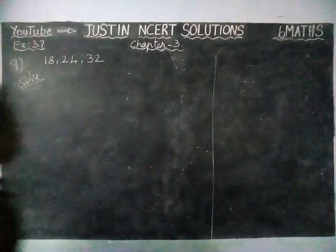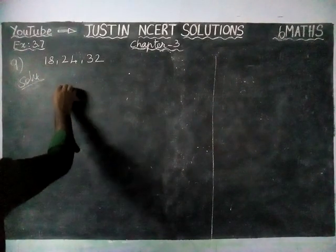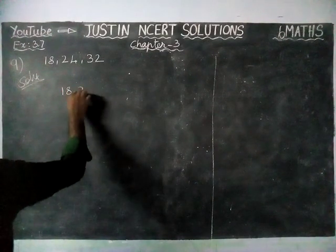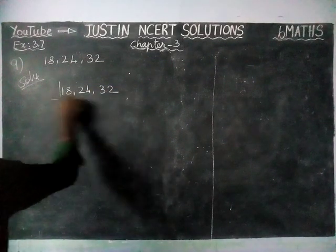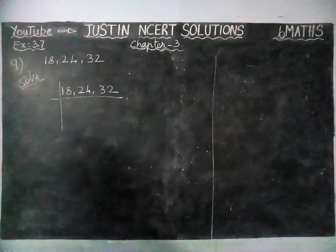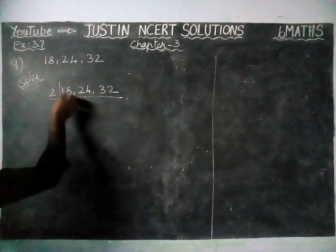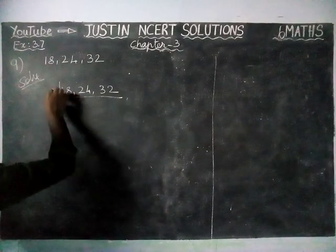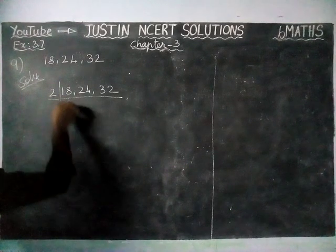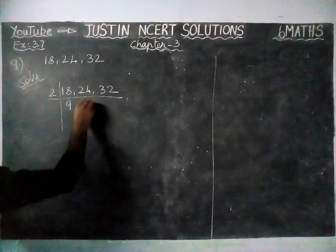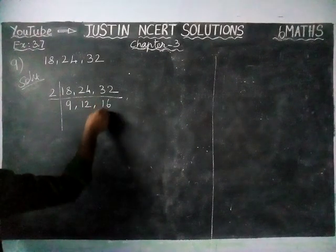First we are going to find the LCM of the given values. We are going to divide by 2 because the units place is divisible by 2. Therefore: 2 divides 18 giving 9, 2 divides 24 giving 12, and 2 divides 32 giving 16.